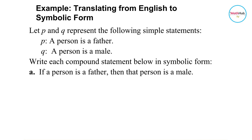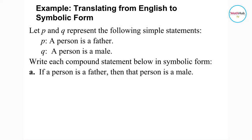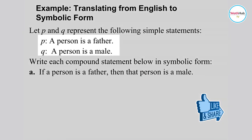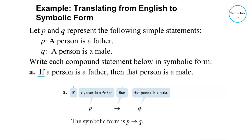To illustrate this, let p represent the statement 'a person is a father' and q represent the statement 'a person is a male.' Write each compound statement in symbolic form. For 'if a person is a father then that person is a male': 'a person is a father' is p, and 'that person is a male' is q. Since we have an if-then statement, we use the arrow symbol, so the symbolic form is p → q.